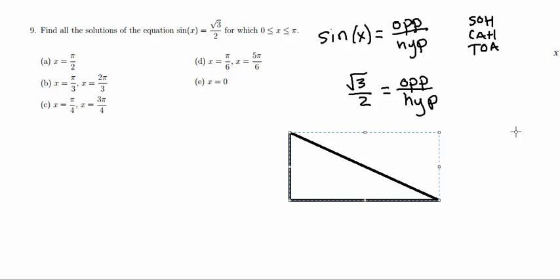So this side is going to be a length of 2. This is a 90 degree angle. And the opposite side is going to be rad 3.